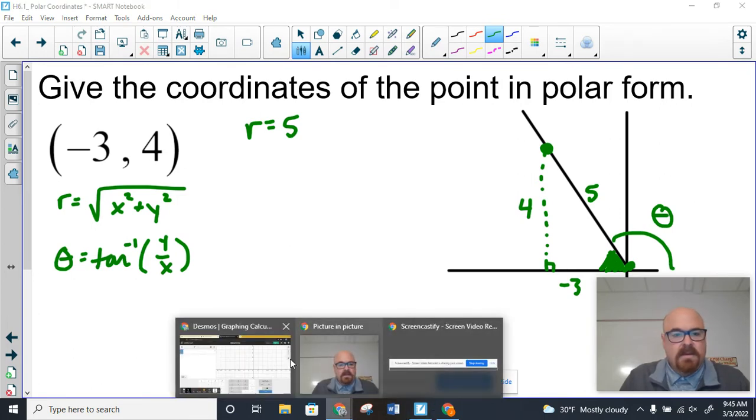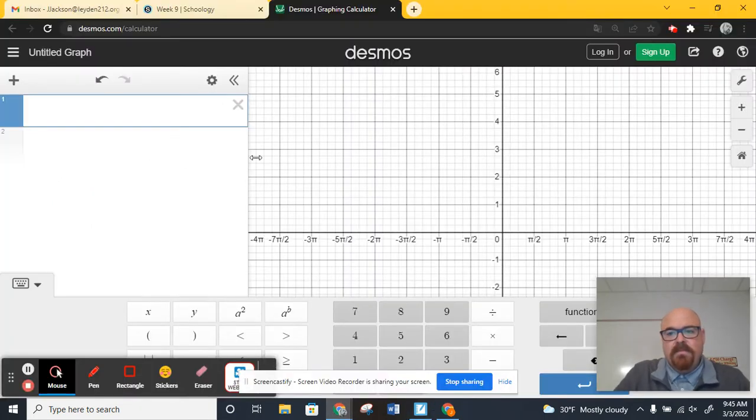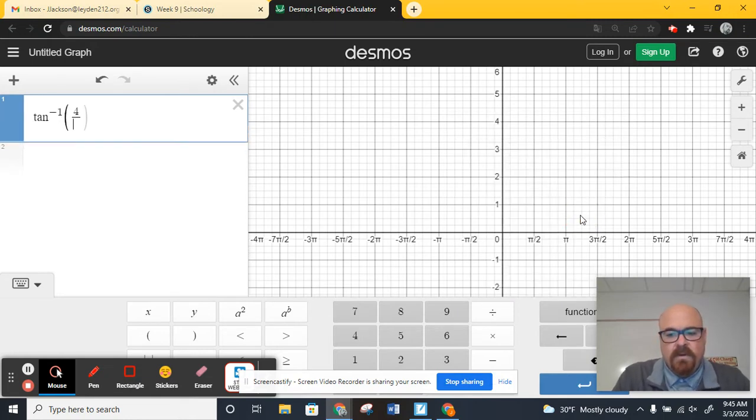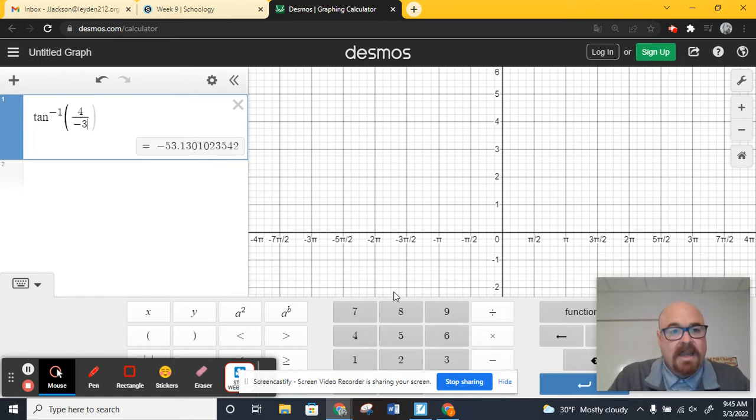Where are we at? Here we go. When we go to the formula and we do the inverse tangent of 4 over negative 3, we get negative 53.13 degrees.